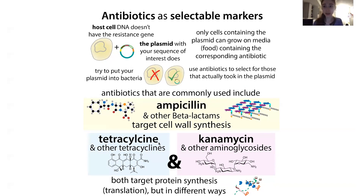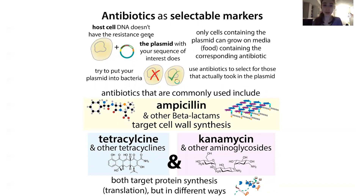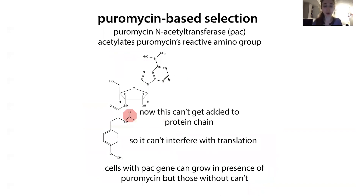We can use antibiotics that specifically target bacterial ribosomes and not our own, because we don't want to harm the patient. But there are also times when we want antibiotics that target mammalian ribosomes when doing cell culture work — we want to do something similar but in human cells or other cells in a dish. Here, instead of antibacterial antibiotics, we use an antibiotic that inhibits the ribosomes in those cells for selection, and puromycin-based selection is one way to do this.